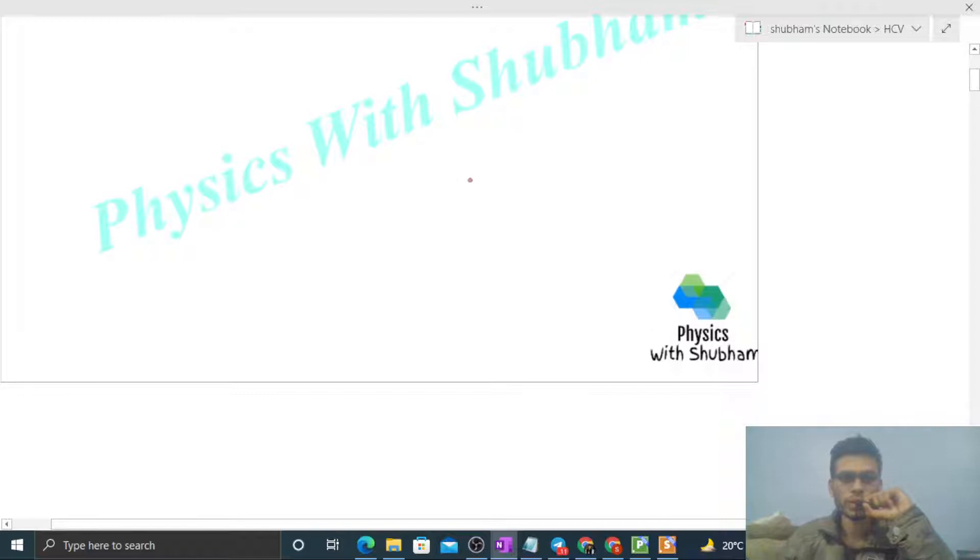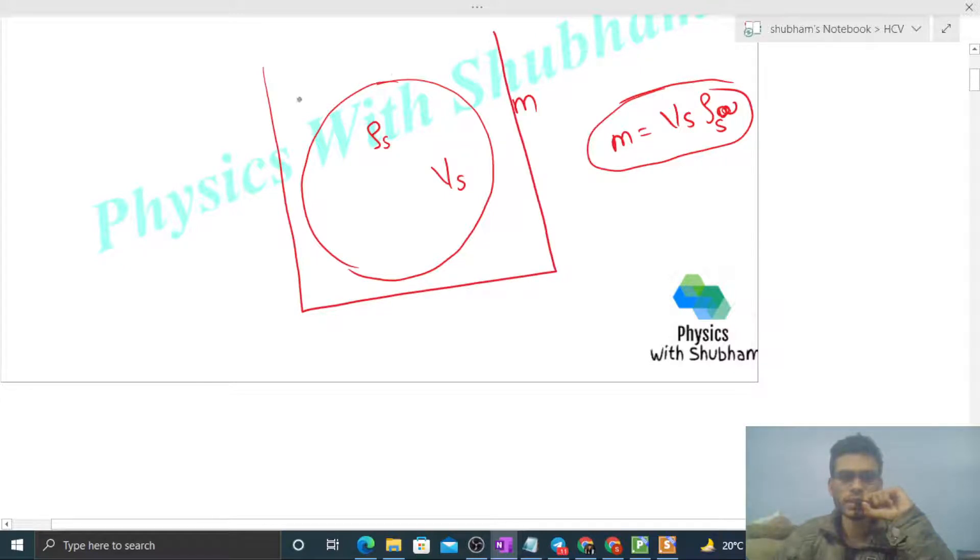Before going into the question directly, I want you to understand one thing. Let's say we have a solid with actual mass small m, density rho s, and volume vs. Then mass will be volume into density, that is density of solid into volume of solid.